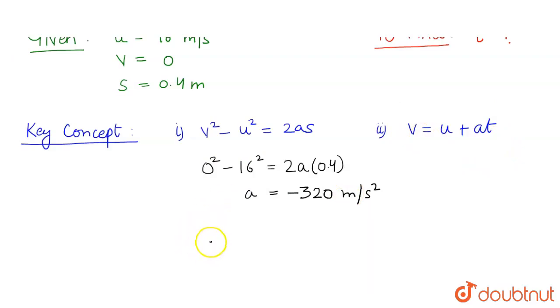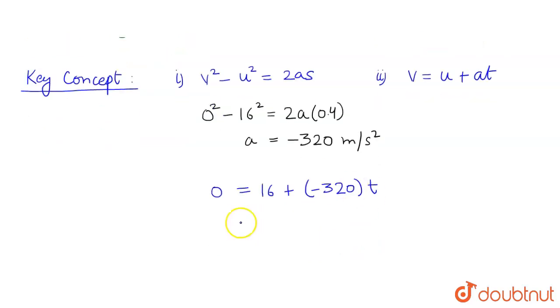From equation number 2, we have v = u + at. So v is 0 = u is 16 + acceleration is -320 times t. So from here we'll get time t as 0.05 seconds. So this is our answer. Thank you.